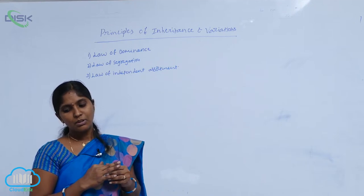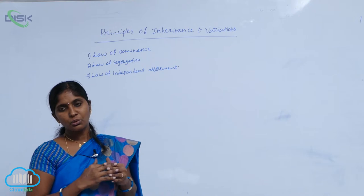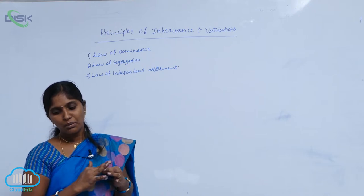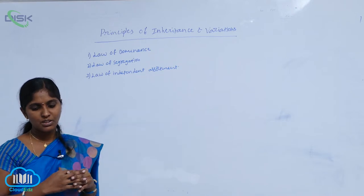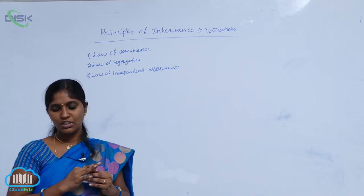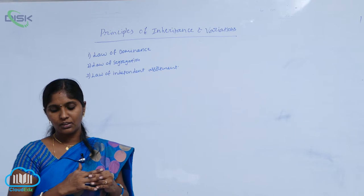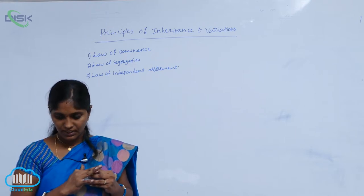In a dissimilar pair of factors pertaining to the characters, the law of dominance is used to explain the expression of only one of the parental characters in monohybrid crosses.